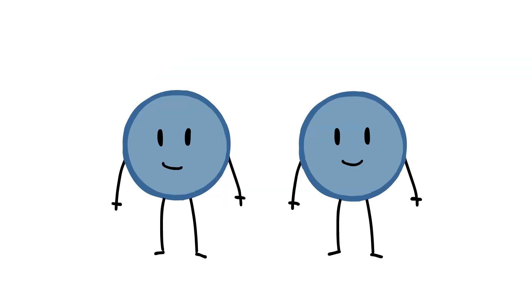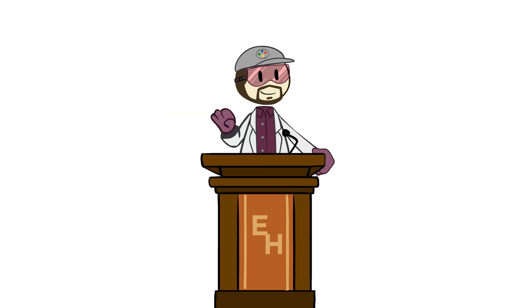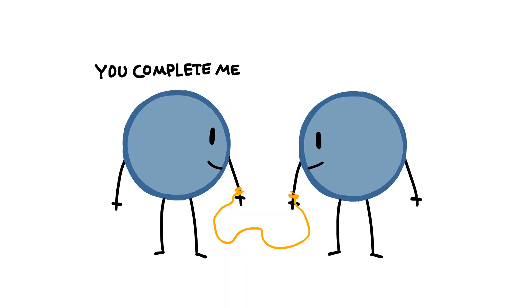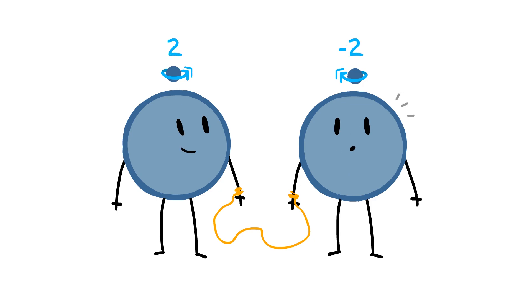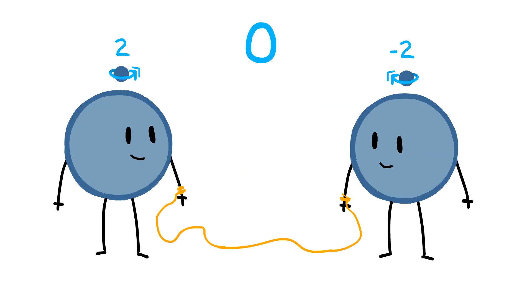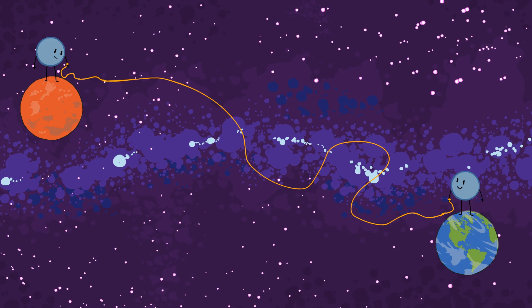The idea is this: when two particles are entangled, you have to see them as not two particles but as one complete system. Anything you know about the complete system has to be true when you look at the component parts. So let's say you've got a pair of entangled particles and you know the spin of these particles adds up to zero. Now let's say you mess with one of those particles and increase its spin a bit — the other particle's spin will instantly change to correct and keep the whole system at a spin of zero. This happens no matter how far away those two particles are; they could be in the same room or they could be across the galaxy.